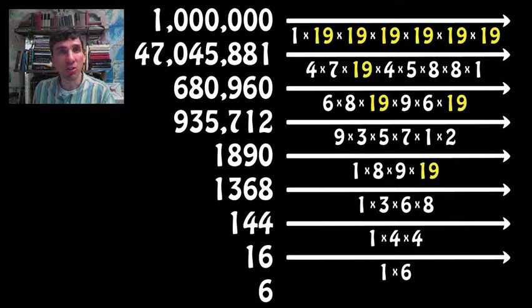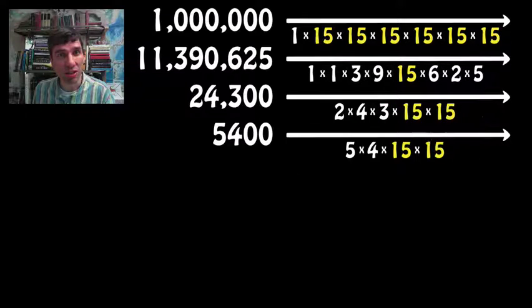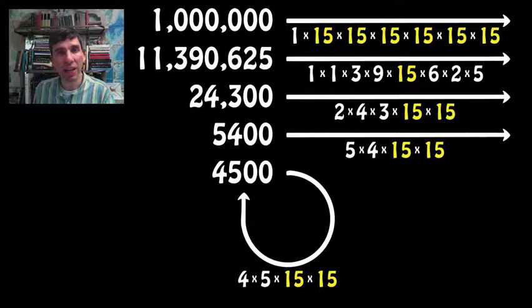If you choose 15, it does not crash to a single digit. Instead, we end up with this loop. 4500 is equal to 4 times 5 times 15 times 15. So it's self-perpetuating. So that will never crash to a single digit.